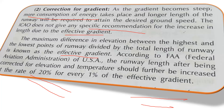According to FAA — the Federal Aviation Administration of the United States — the runway length, after being corrected for elevation and temperature, should further be increased at a rate of 20% for every 1% of effective gradient. The effective gradient formula is: (top RL − lowest RL) divided by the basic runway length.